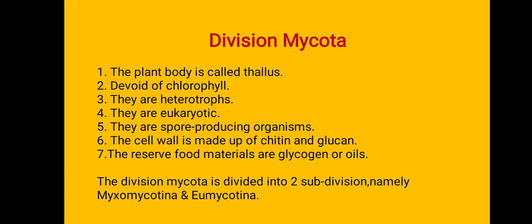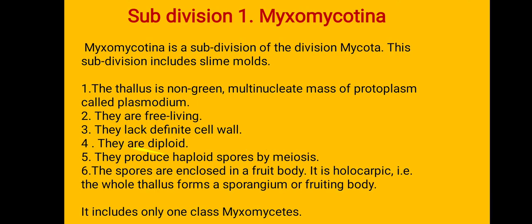The reserve food material is glycogen and oils. Division Mycota is divided into two subdivisions: Myxomycotina and Eumycotina. In the subdivision Myxomycotina, the thallus is a non-green, multinucleate mass of protoplasm called the plasmodium. Chlorophyll is absent and the structure is a plasmodium.